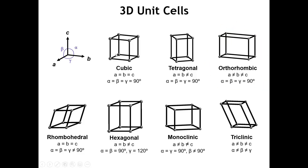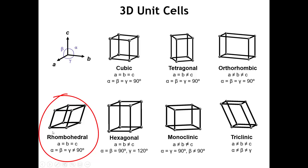If you were to start from the cube and stretch it from opposite corners, you would get the unit cell called rhombohedral, where all three lattice vectors are the same length and the angle between them is the same, but it's not equal to any specific value — they're no longer at right angles to each other. In this case, each face of the unit cell is a rhombus.